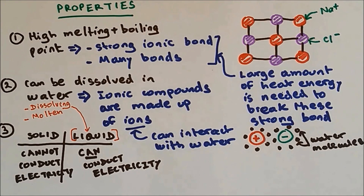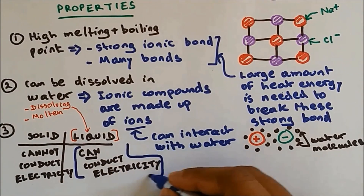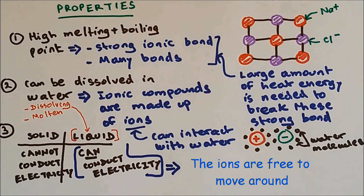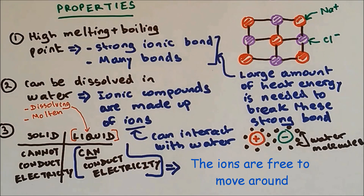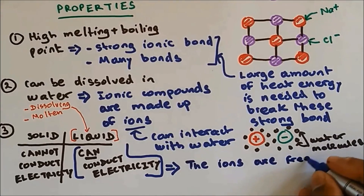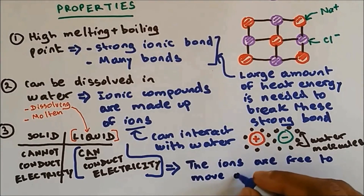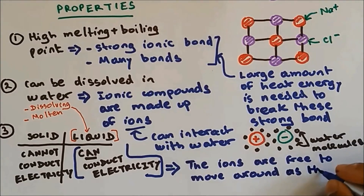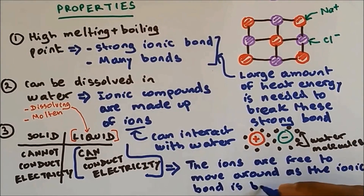The reason why, when it's a liquid, it can conduct electricity: when the ionic compound is found as a liquid, the ionic bond is broken so the ions are free to move around. If they are free to move around, then they can conduct electricity.